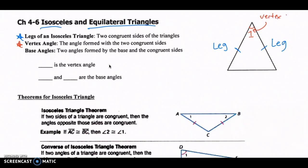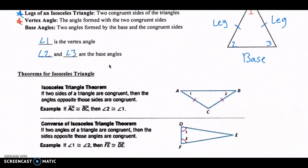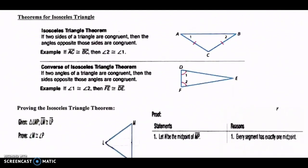The vertex angle is angle one. Now, the base angles — the base angles are the two angles formed by the base, which is the bottom of the triangle that is not one of the two legs. They are formed by the base and the two congruent sides. I'll call these angle two and angle three, and those are the base angles.